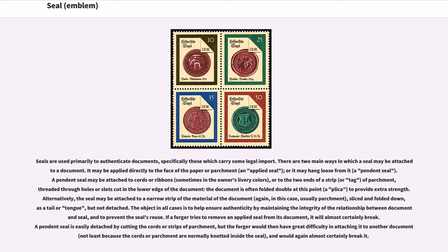The document is often folded double at this point — a plica — to provide extra strength. Alternatively, the seal may be attached to a narrow strip of the material of the document, usually parchment, sliced and folded down as a tail or tongue but not detached. The object in all cases is to help ensure authenticity by maintaining the integrity of the relationship between document and seal, and to prevent the seal's reuse.